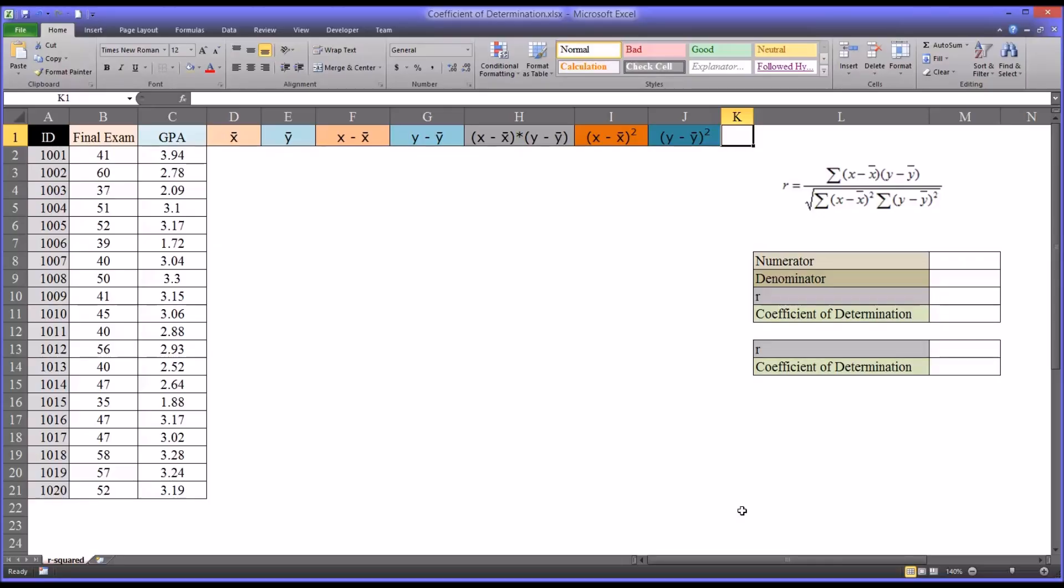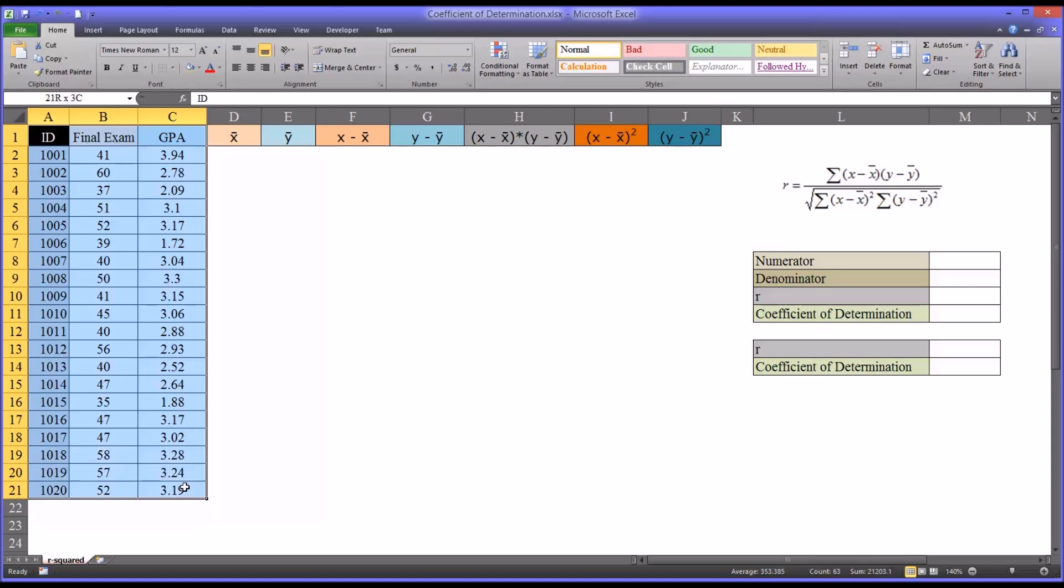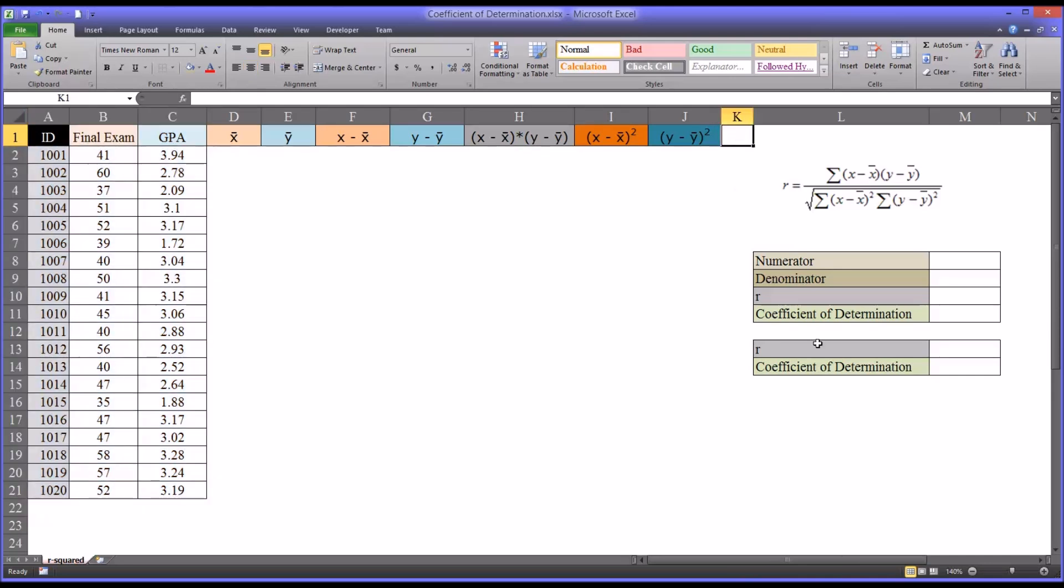Hello, this is Dr. Grande. Welcome to my video on calculating the coefficient of determination using Microsoft Excel. The first way will be by squaring R, which represents correlation, and I have the formula for that here on the top right. And the second will be through using the built-in RSQ function in Excel.